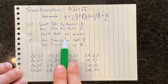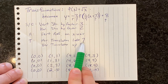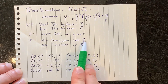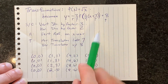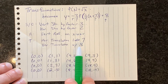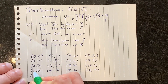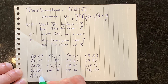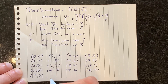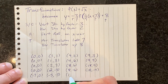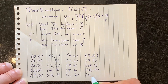A horizontal translation left seven means you take seven away from each of the x's — counterintuitive from what's written there, but true. So taking away seven from zero gives me negative seven, taking seven away from two gives me negative five, and we take seven away from the remaining x-coordinates as well.